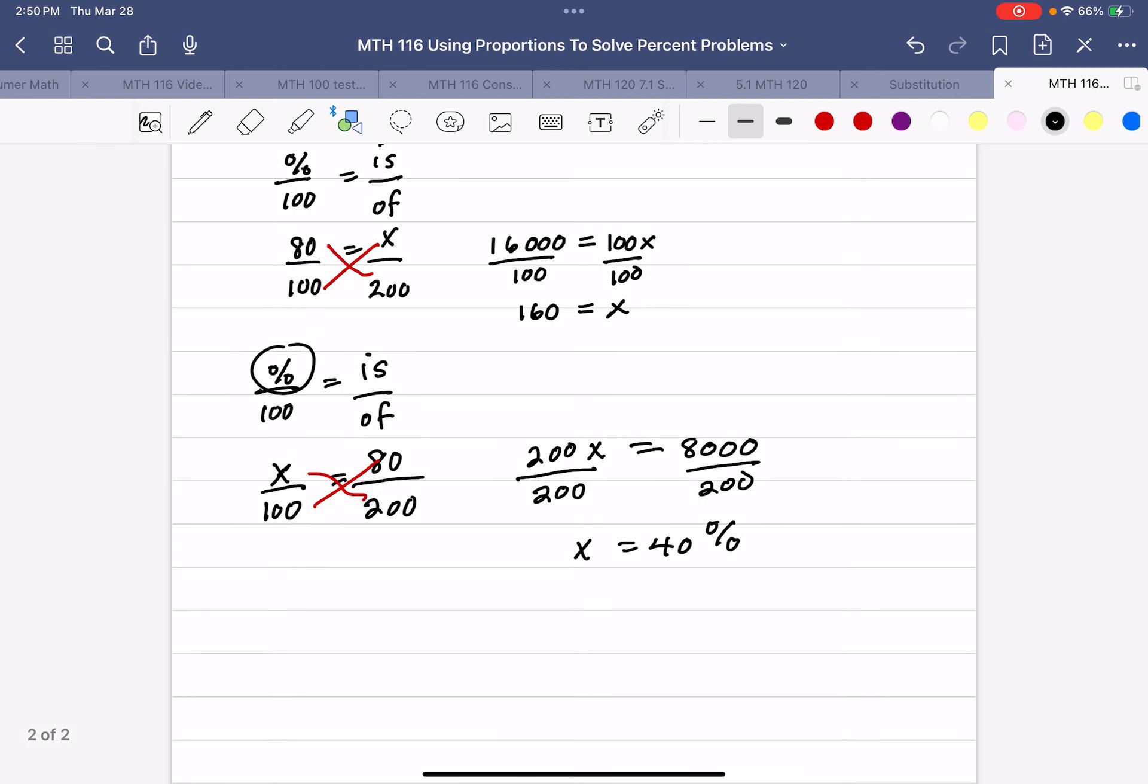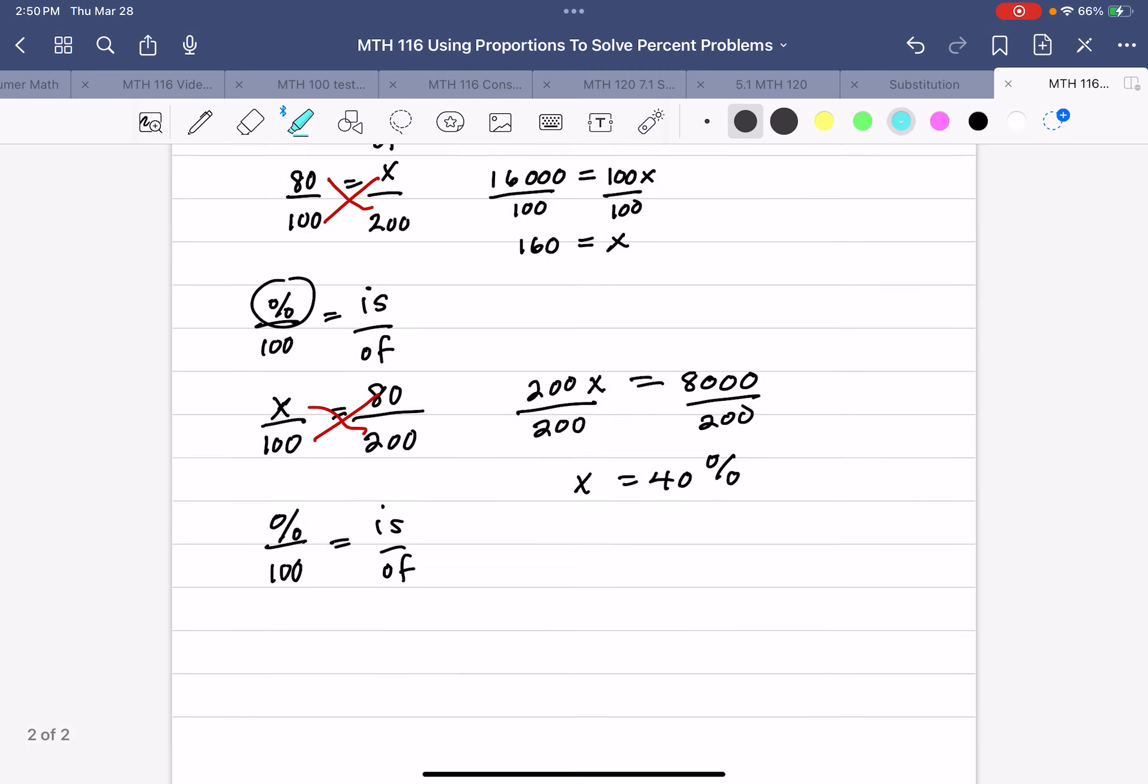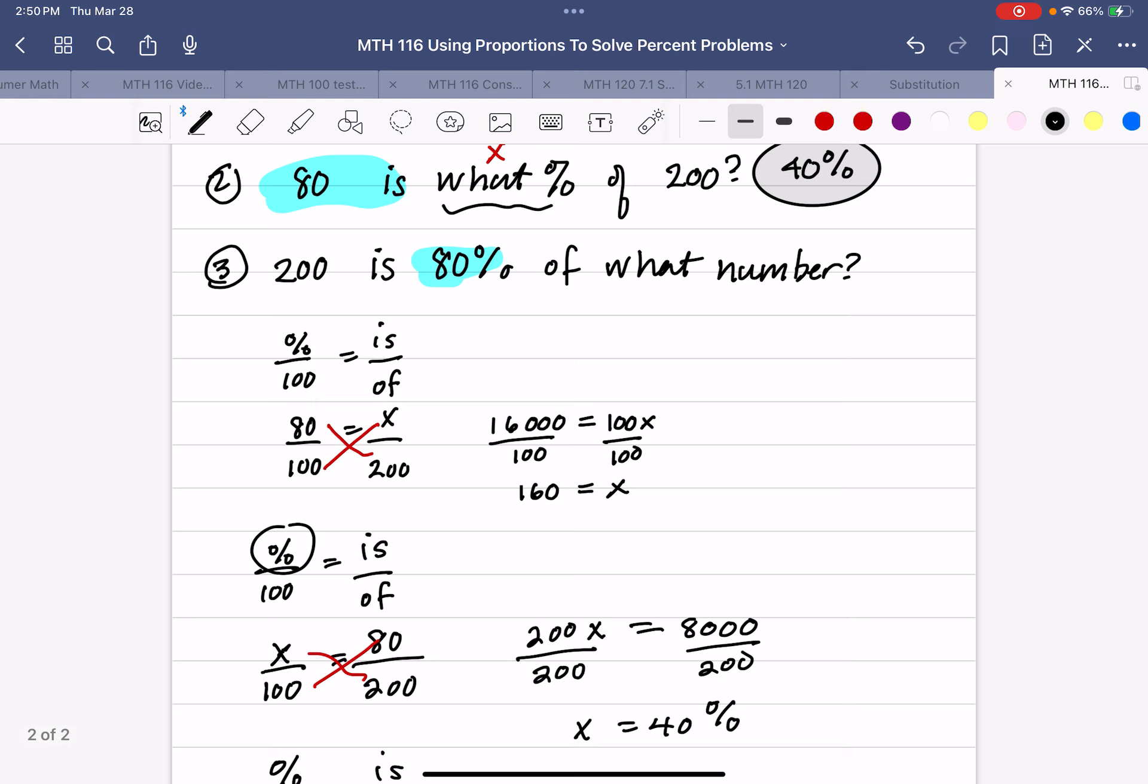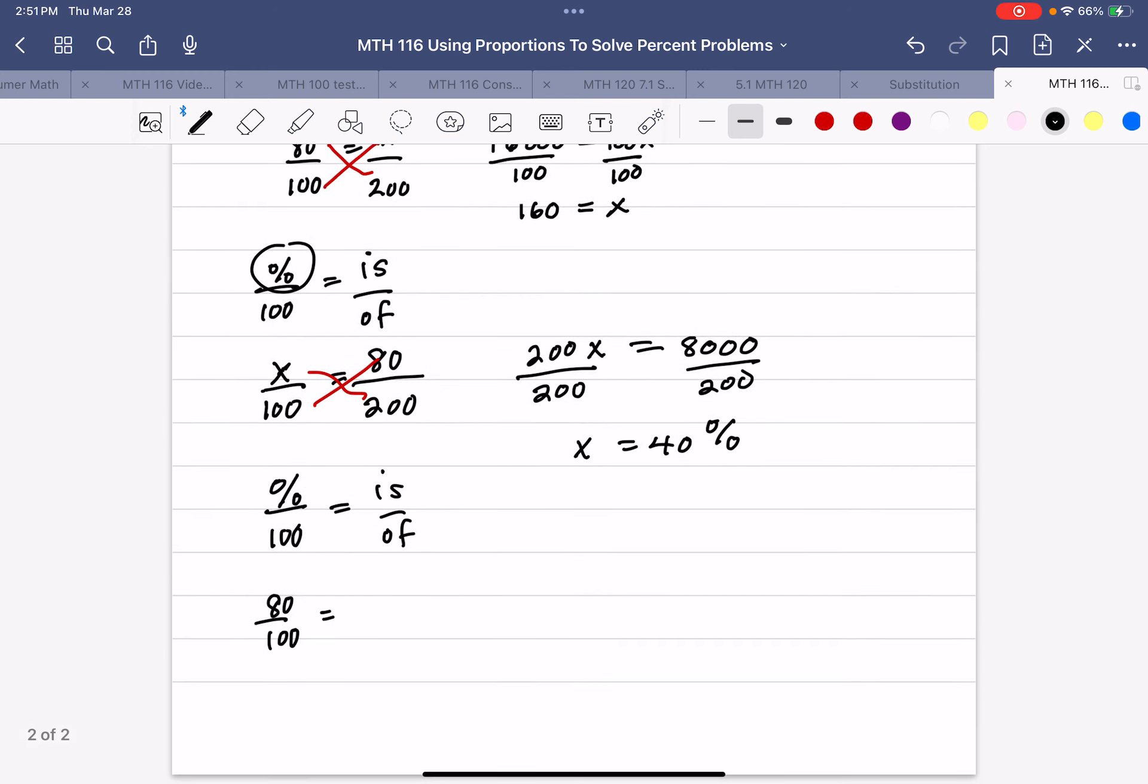So, percent over 100 equals is over of. And so, we know the percent. Our percent is 80 percent. So I'm going to put 80 over 100, then I'm going to look for is and of. So 200 is with the is and of, and the x is after of. So 200 over x.